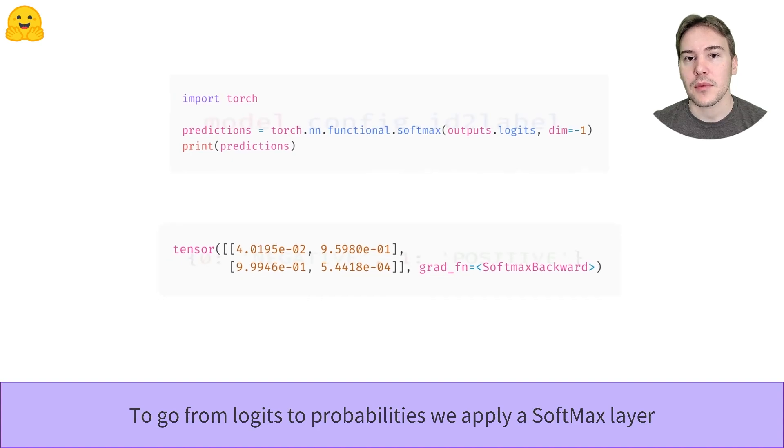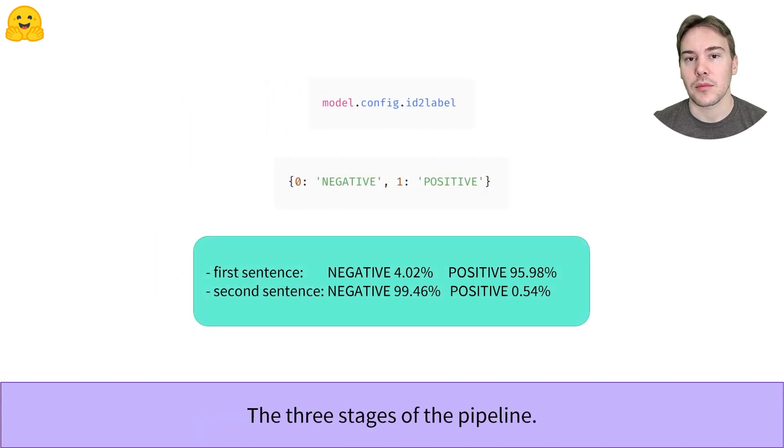The last step is to know which of those corresponds to the positive or the negative label. This is given by the id2label field of the model config. The first probabilities, index 0, correspond to the negative label, and the second, index 1, correspond to the positive label.